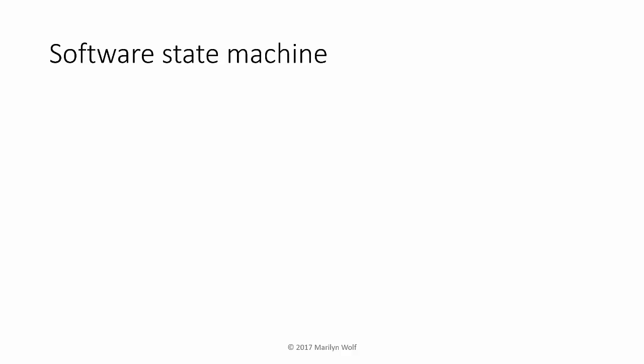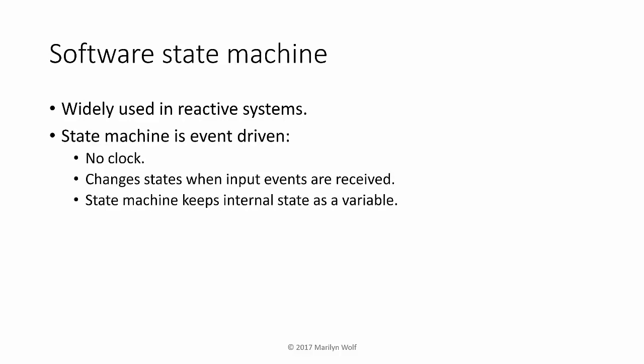Many embedded systems are reactive systems that respond to events from the environment and generate events to manipulate the environment. We can use software state machines to implement these reactive systems. This kind of state machine is different from the kind you may have used in hardware. It's event-driven. There's no clock that determines exactly when the inputs are sampled. The system changes state when an input event is received. The state machine keeps that internal state as a variable.